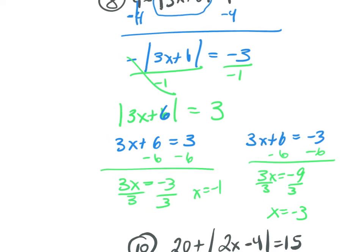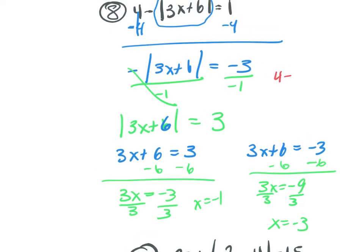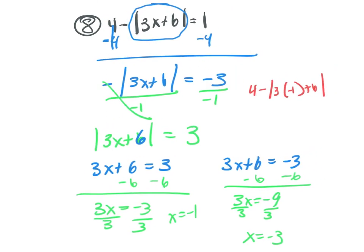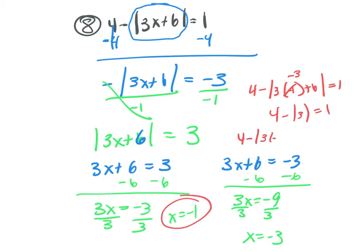Subtract 6 from both sides: 3x equals negative 3, divide by 3, x equals negative 1. Subtract 6 from both sides of the other: 3x equals negative 9, divide by 3, x equals negative 3. Going back to check the original — 4 minus absolute value of 3 times negative 1 plus 6: negative 3 plus 6 is 3, so 4 minus absolute value of 3 equals 1. Yes. For x equals negative 3: negative 9 plus 6 is negative 3, so 4 minus absolute value of negative 3 equals 4 minus 3 equals 1. Both solutions work.